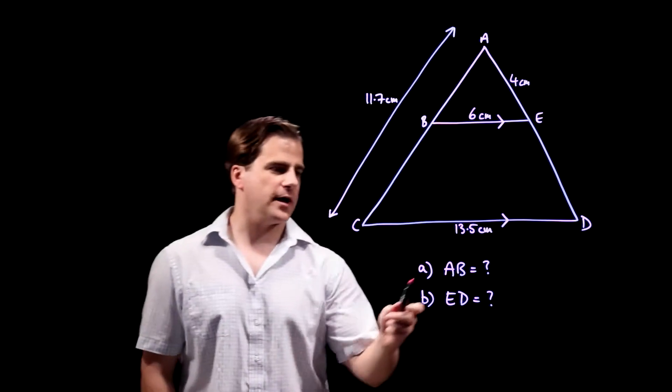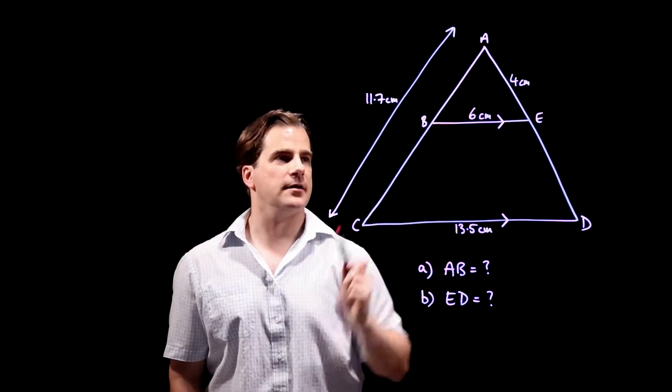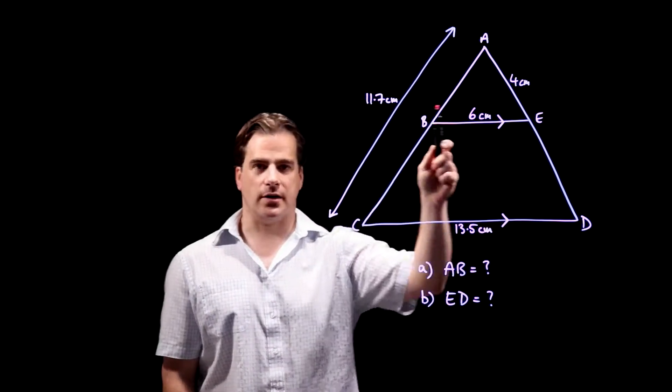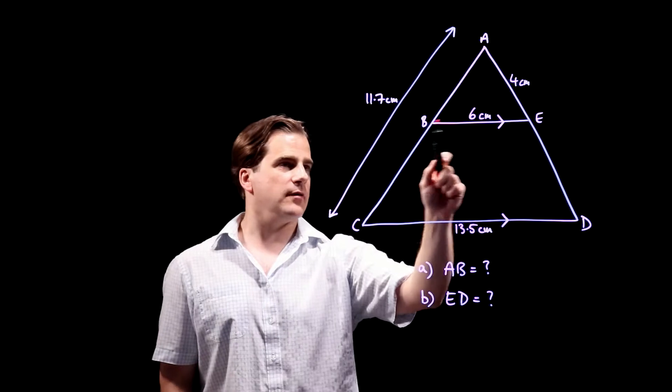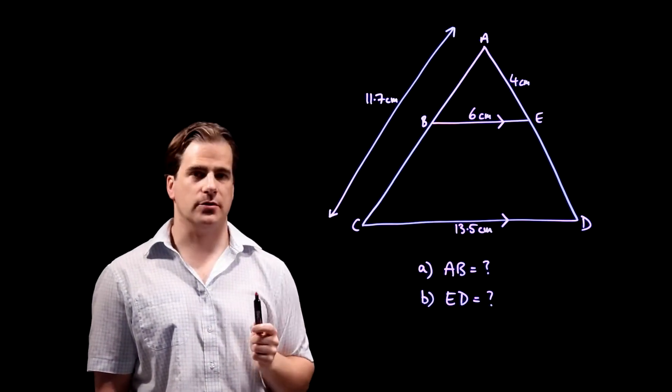Okay, we've got to work out AB. That's the distance from there to there. Now, looking at this triangle, we see these two arrows which means BE and CD are parallel and that's very important.